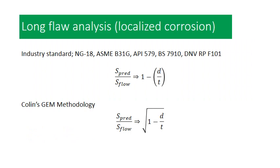In that previous video I was looking at the analysis of long flaws and specifically looking at localized corrosion. I do have some concerns with the mathematical and theoretical basis of the NG18 equations and specifically the ASME B31G equation. The top equation shown is an industry standard — if you're working with an NG18 based equation such as ASME B31G, corrosion assessments following API 579, British Standard 7910, or DNB recommended practice F101, you'll see that the remaining strength of a given localized corrosion flaw as it gets longer becomes proportional to the remaining ligament.